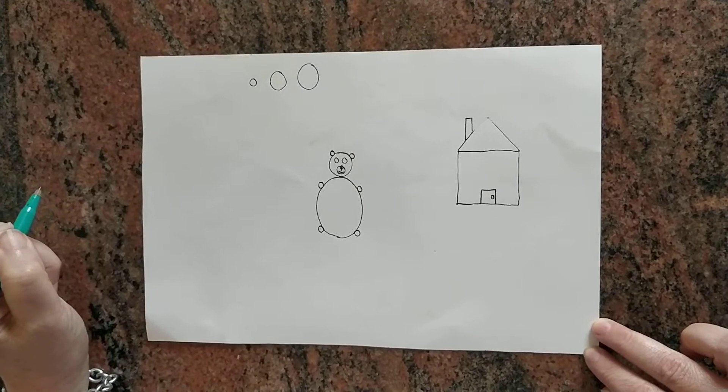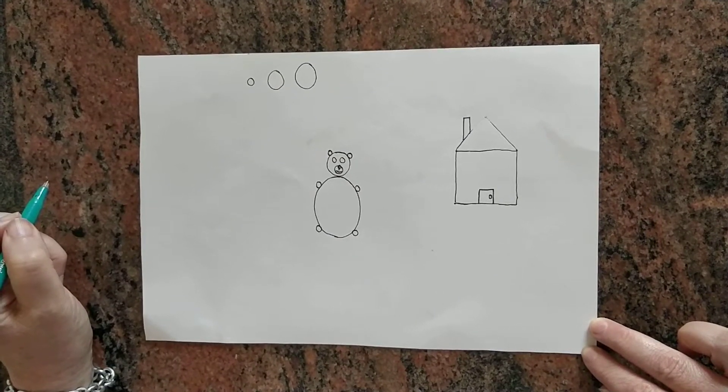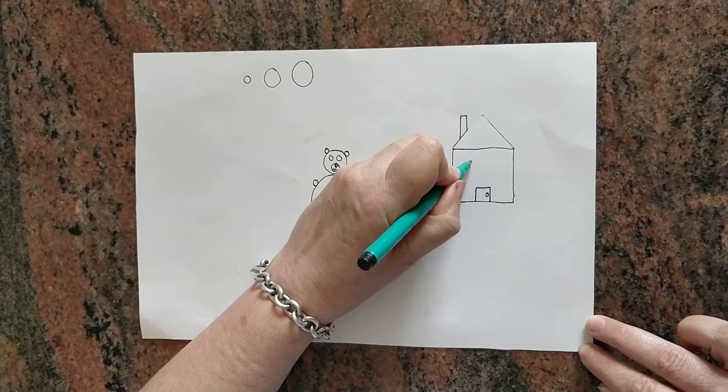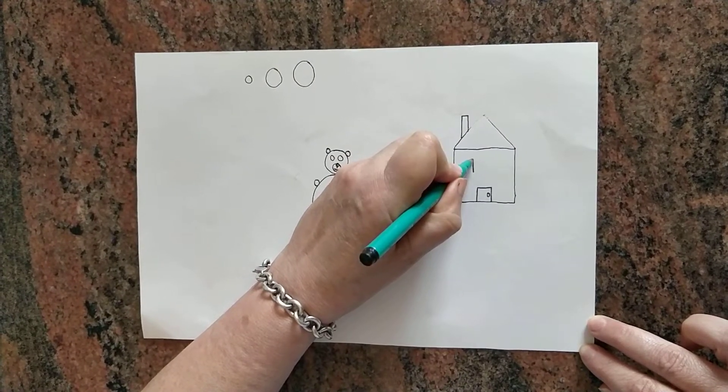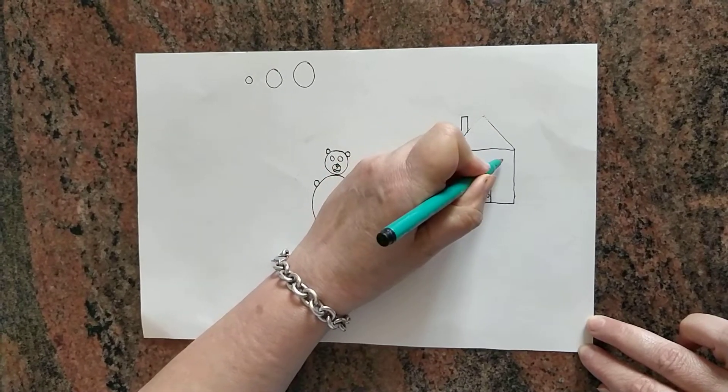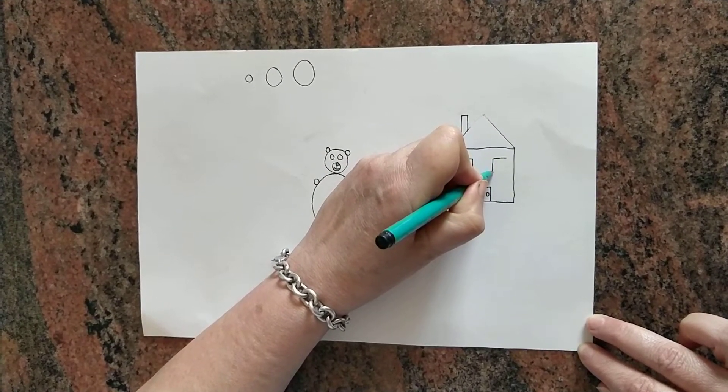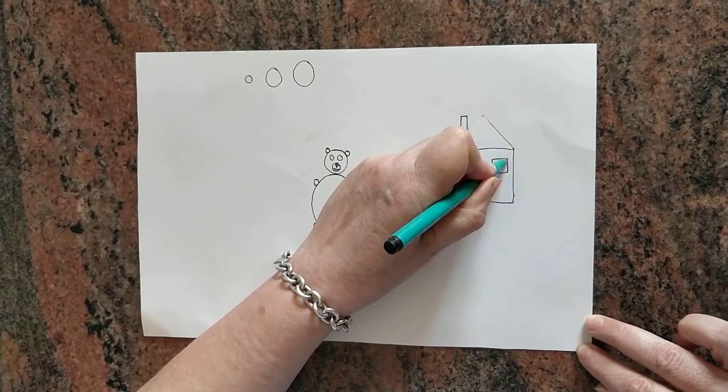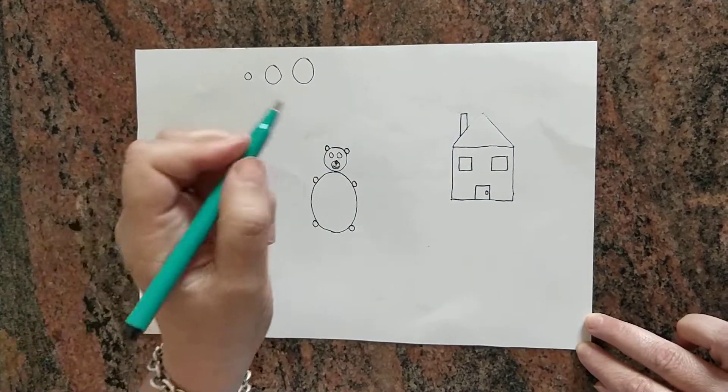And then, let's add two windows, two small squares and then the curtains.